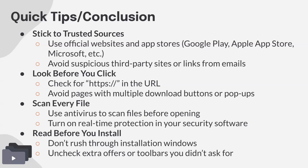Avoid suspicious third-party sites or links from emails. If the name of the software you're downloading doesn't match the website URL, avoid it. Also avoid any email with a suspicious attachment or link. Look before you click — check for https:// in the URL, avoid pages with multiple download buttons or pop-ups, and scan any files you're downloading using your antivirus before opening. You can also turn on real-time protection in your security software.